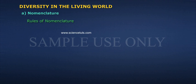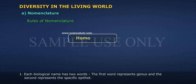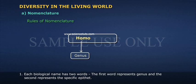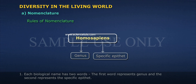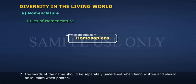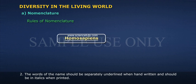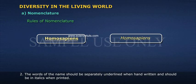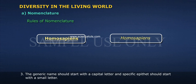Rules of Nomenclature: 1. Each biological name has two words. The first word represents genus and the second represents the specific epithet. 2. The words of the name should be separately underlined when handwritten and should be in italics when printed. 3. The generic name should start with a capital letter and the specific epithet should start with a small letter.